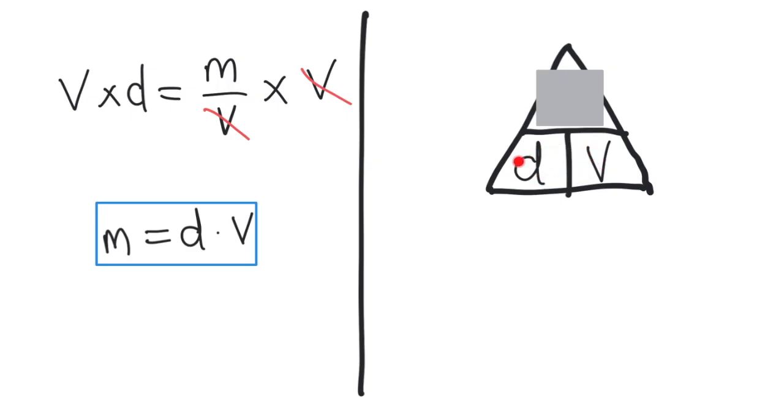With the m covered, it shows the d next to the v. When the variables are beside each other like this, it means to multiply them together. So mass equals density times volume.